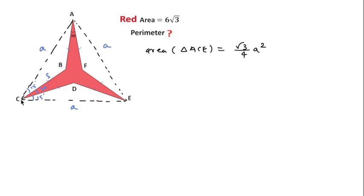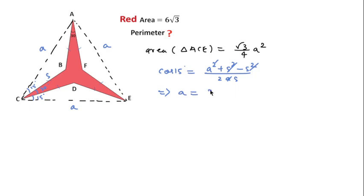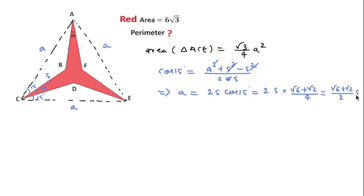I will apply the cosine rule in triangle CBA. We can write: cos15° = (A² + S² − S²) / (2AS). The S² terms cancel, and simplifying gives A = 2S·cos15°. Since cos15° = (√6 + √2)/4, we get A = S·(√6 + √2)/2.